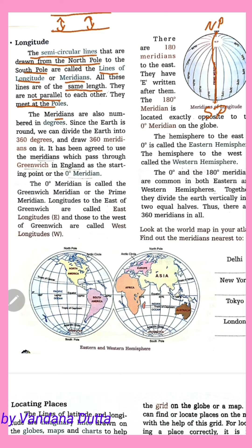The meridians are also numbered in degrees. Since the earth is round, we can divide the earth into 360 degrees.